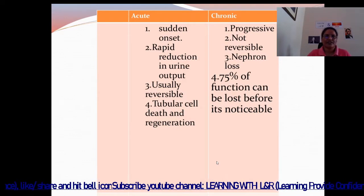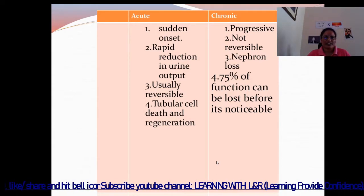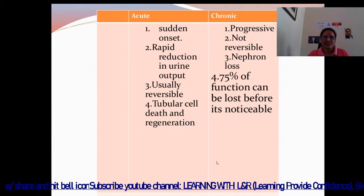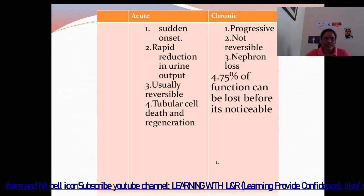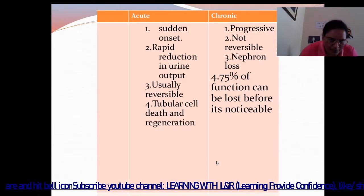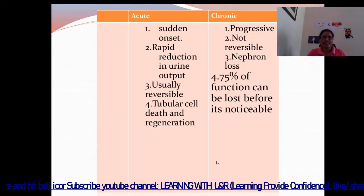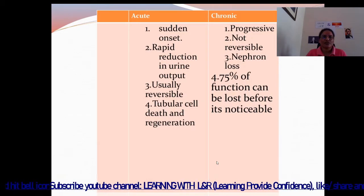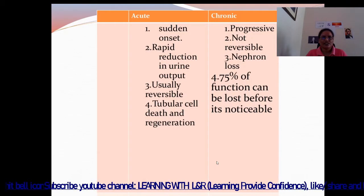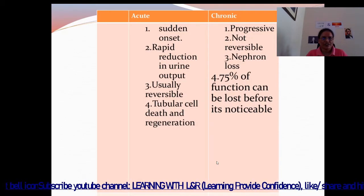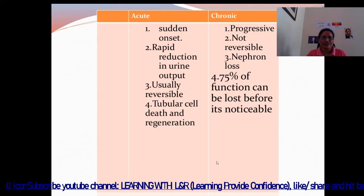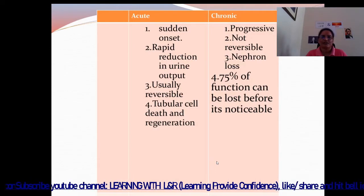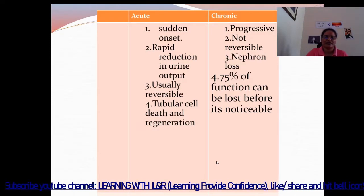The difference between acute and chronic: acute has sudden onset with rapid reduction in urine output, and is usually reversible with tubular cell death and regeneration. Chronic is progressive, not reversible, involves nephron loss, and up to 75% of function can be lost before it is noticeable.